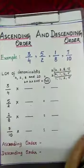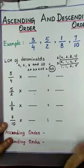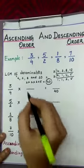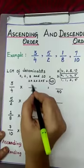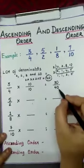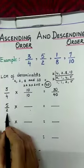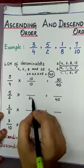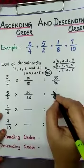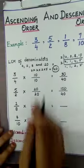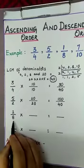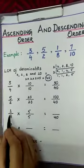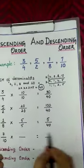We convert all unlike fractions into like fractions with 40 as the denominator. For 3/4: 4 × 10 = 40, and 3 × 10 = 30, giving 30/40 which equals 3/4. For 5/2: 2 × 20 = 40, and 5 × 20 = 100, giving 100/40 which equals 5/2. For 1/8: 8 × 5 = 40, and 1 × 5 = 5, giving 5/40 which equals 1/8.